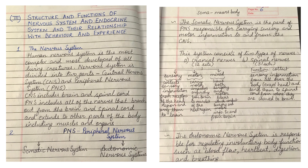The autonomic nervous system is responsible for regulating involuntary body functions such as blood flow, heartbeat, digestion, and breathing. Involuntary means that something is done without our will — blood flow, heartbeat, digestion, and breathing all happen on their own, which is why they are called involuntary body functions.